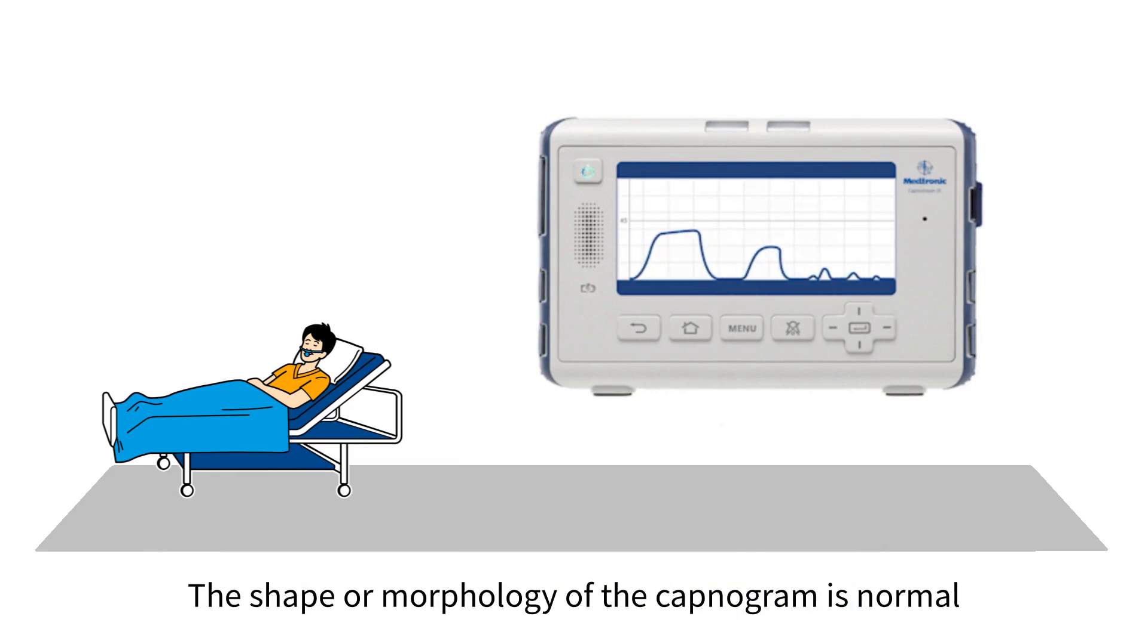The shape or morphology of the capnogram is normal with rapid descent and then a flat line showing no air movement.